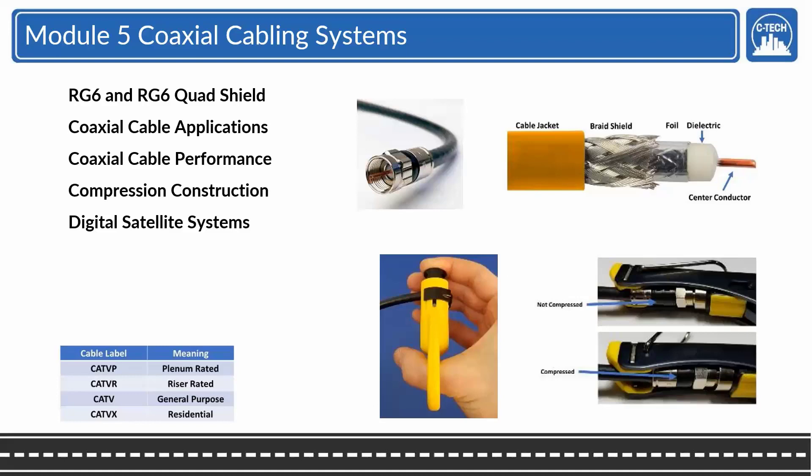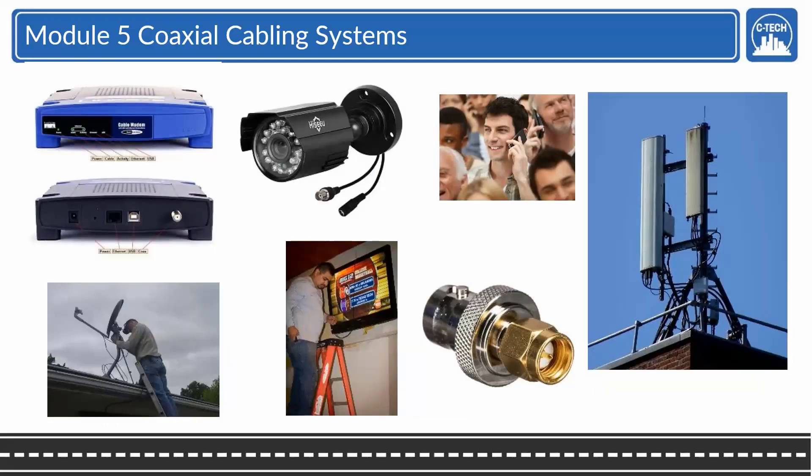We're going to do the compression with the F-type. Satellites, communication systems, and of course we'll do distribution and DAS. Broadband and baseband, and there's DAS.